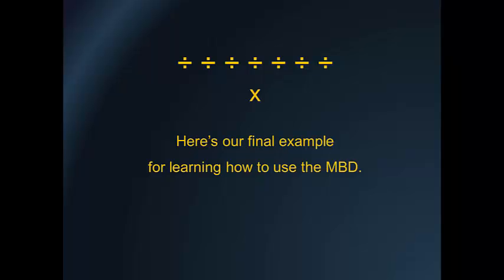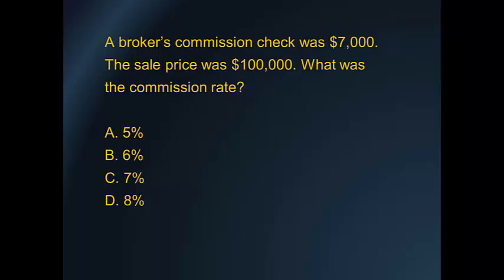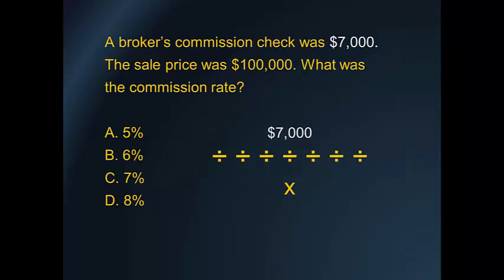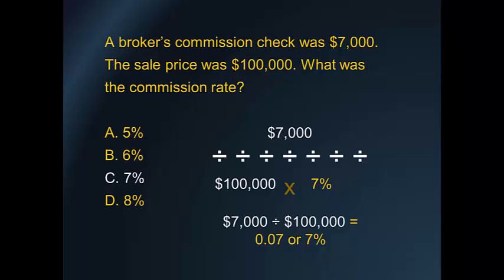Here's our final example for learning how to use the multiply-divide bar. A broker's commission check was for $7,000. The sale price was $100,000. What was the commission rate? Always start by analyzing the numbers in the question. The $7,000 is the little number, so it goes at the top. The $100,000 is the big number, so it goes in the lower left. Rule 3: TGIF — top goes in first. If you have the part, it is always touched into your calculator first, and your math function is division. $7,000 divided by $100,000 equals 0.07, or 7%.